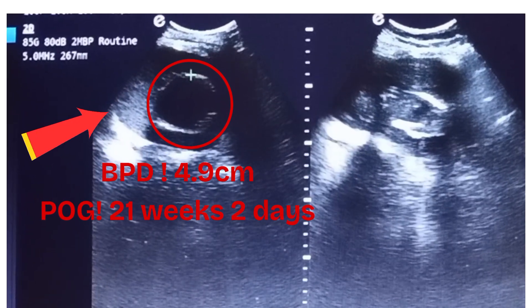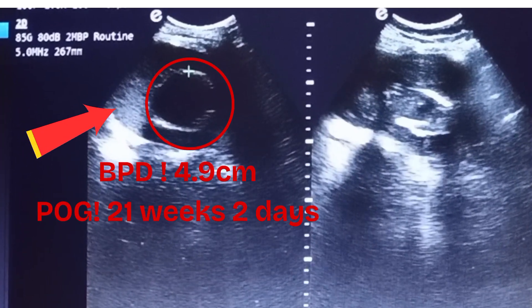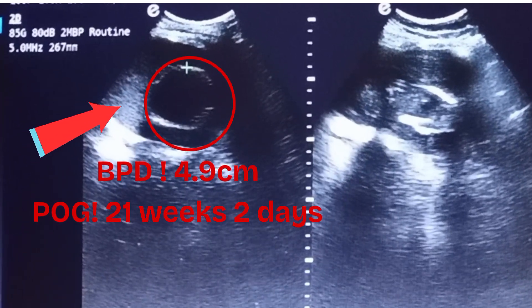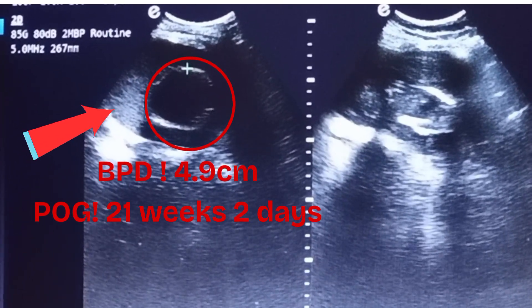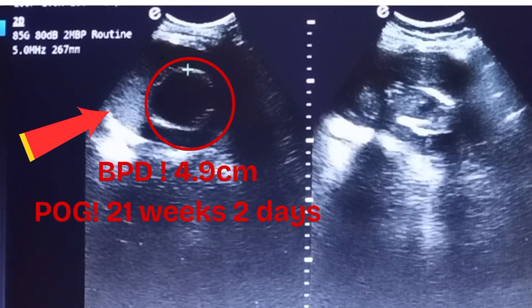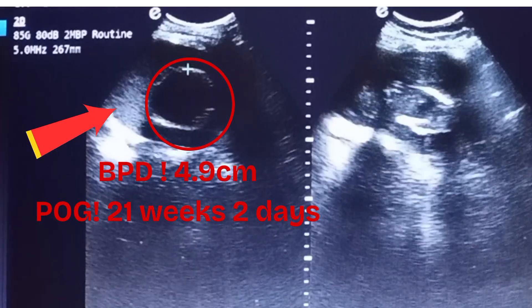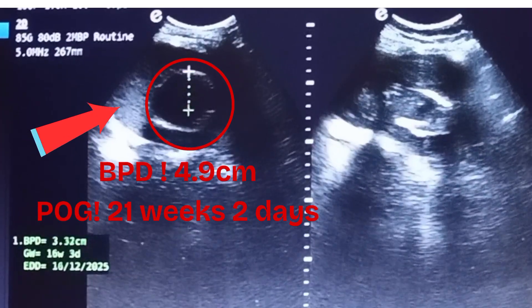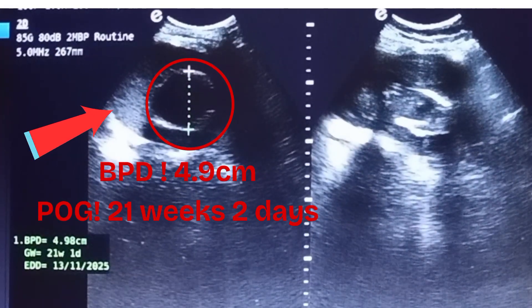The biparietal diameter (BPD), meaning the diameter of the skull bones, is 4.9 cm, corresponding to 20 weeks and 2 days period of gestation.